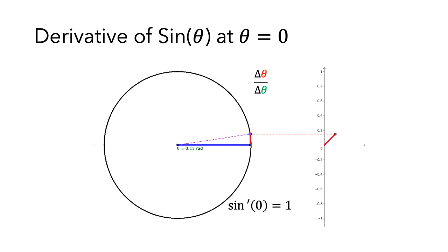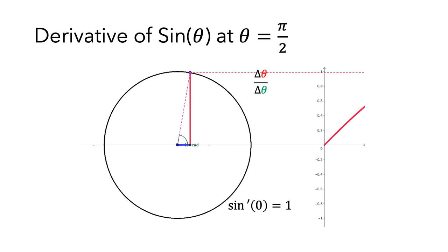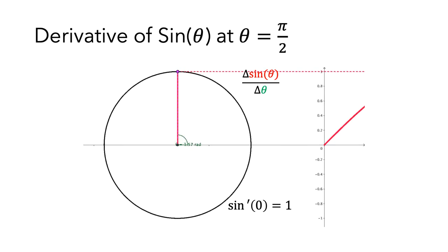Next, let's look at what happens when theta is close to pi over 2 radians. Since theta isn't close to 0, it's no longer the case that sine of theta is approximately the same value as theta. Now, let's look at what happens to the ratio of sine of theta to theta as theta gets close to pi over 2 radians. As theta got closer to pi over 2 radians, the length of the opposite side of the triangle, the value of sine of theta, didn't really change. This tells us that the value of the derivative of sine of theta at pi over 2 radians is equal to 0.